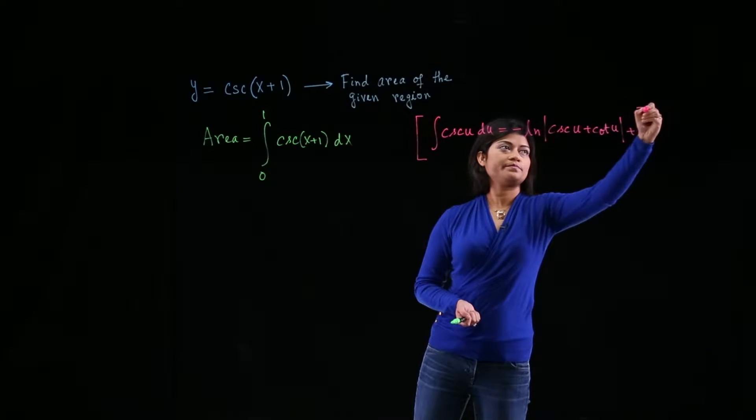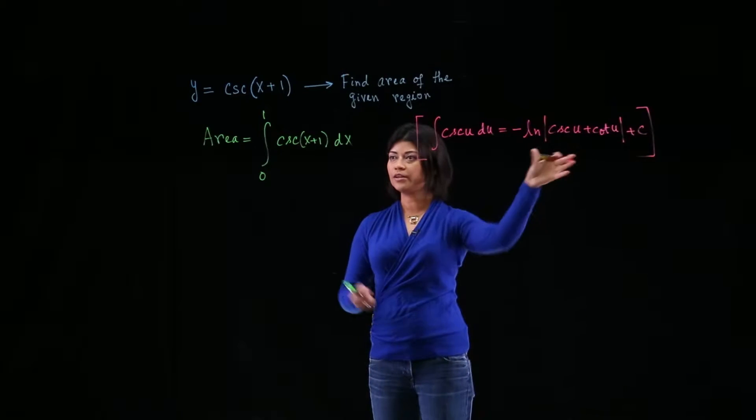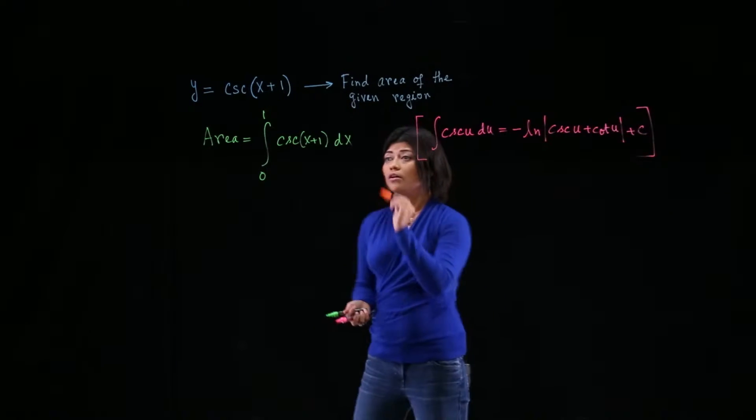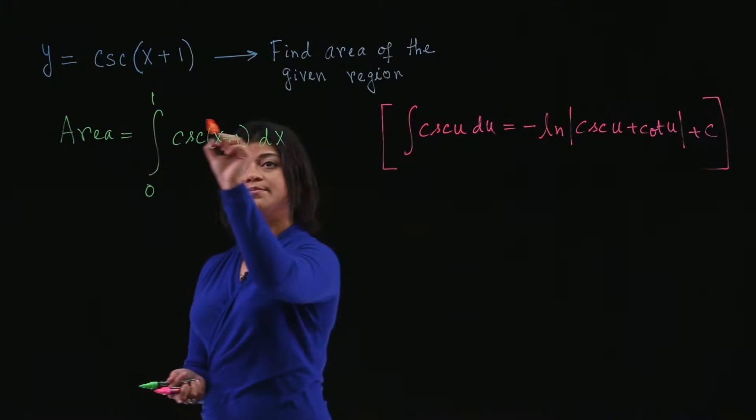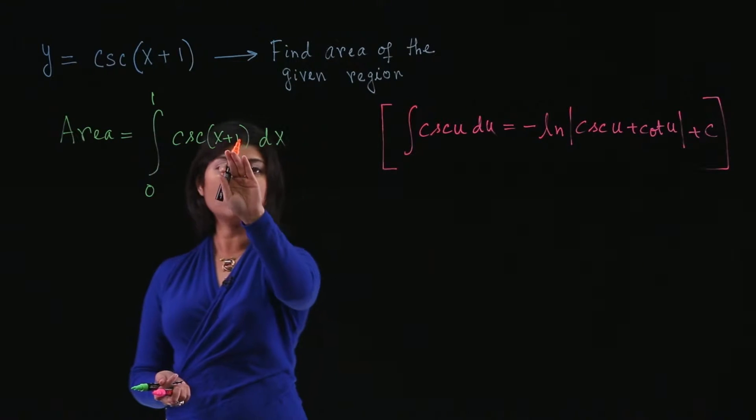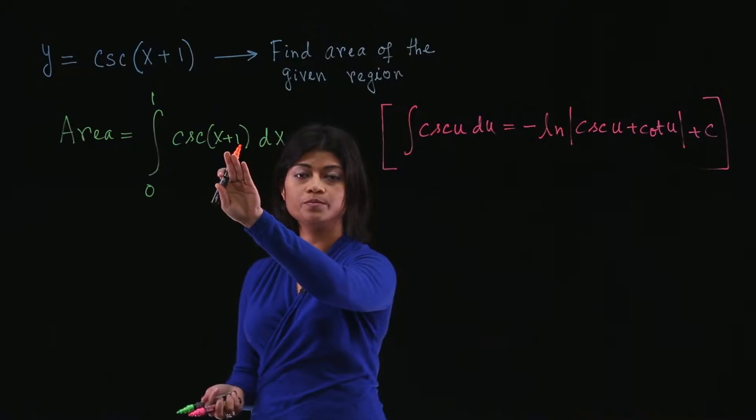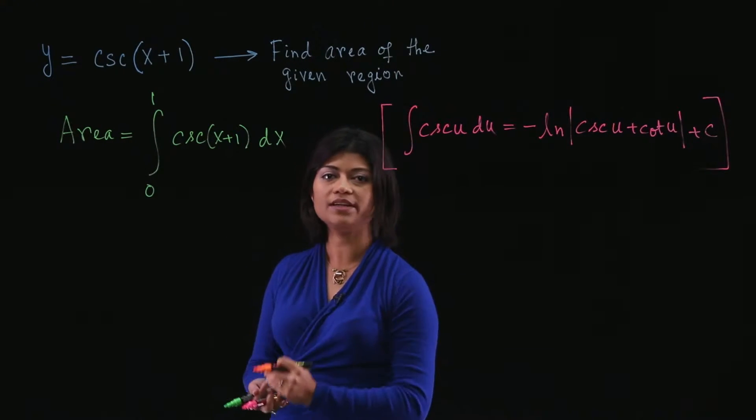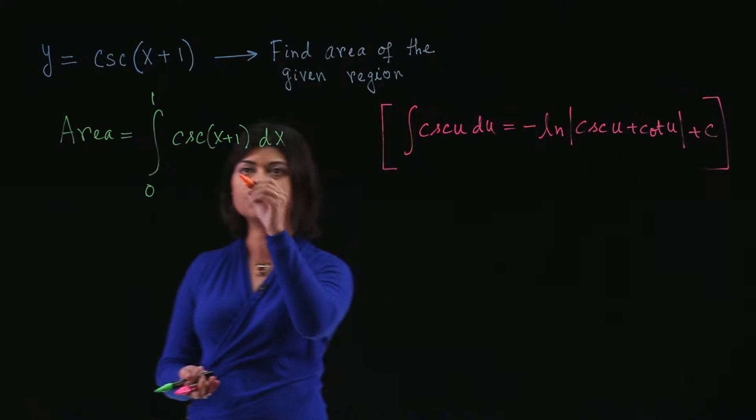Let's see. So we can use that formula to evaluate this integral. All we have to do is make this function look like cosecant of u. We don't have that. We have cosecant of x plus 1. So you can do a simple u substitution. So let's do that.